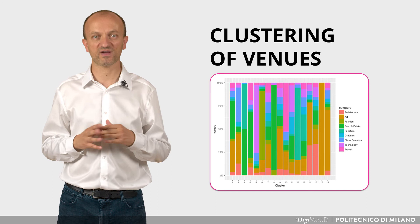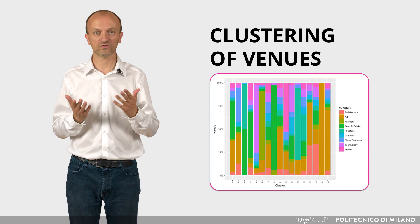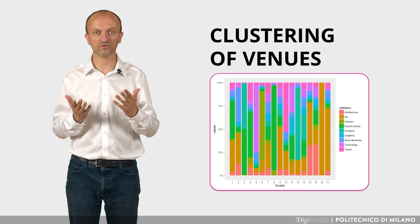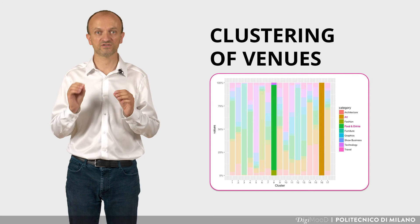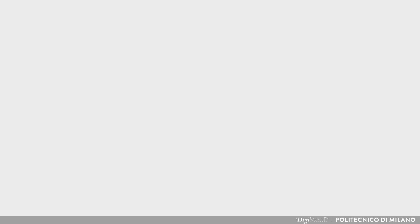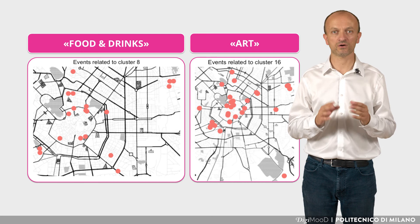Each cluster is represented by a vertical bar showing the share of interests by the respective visitors. In some cases, we have a clear polarization of visitors of some events towards a specific interest. For instance, events in cluster 8 are mainly collecting interests about food, while in cluster 16 it's about art. As a final result, we can see on a map what are and where are the relevant events based on the interests of the visitors.